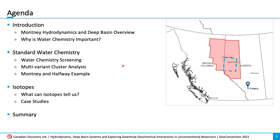Then we will move on to standard water chemistry, including screening processes, different analyses, and finishing up with an example of Motney waters in the Elmworth area, which will outline some of the limitations of standard water chemistry in unconventional reservoirs. We will move from there into isotopes, where we will quickly introduce isotopes, go through some case studies, and discuss the benefit of isotopic analysis, especially for answering tough questions that standard water chemistry cannot. We will then wrap everything up with a quick summary.